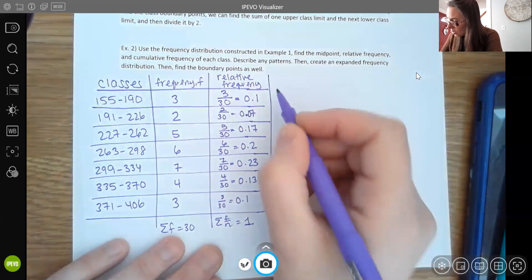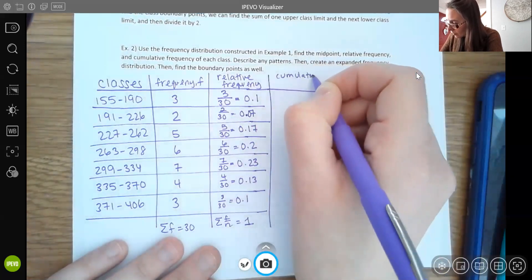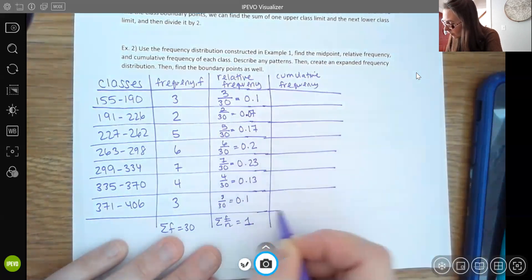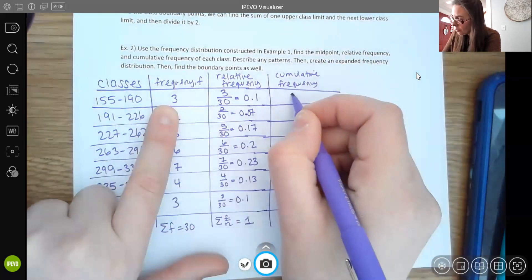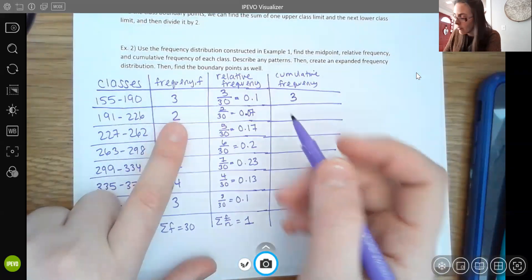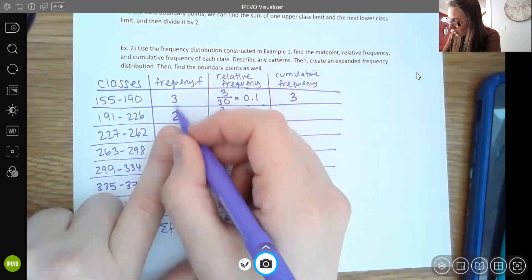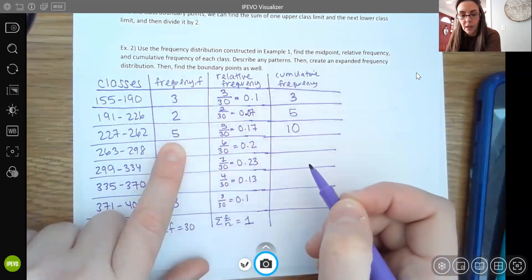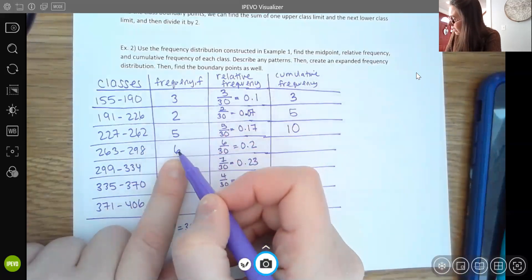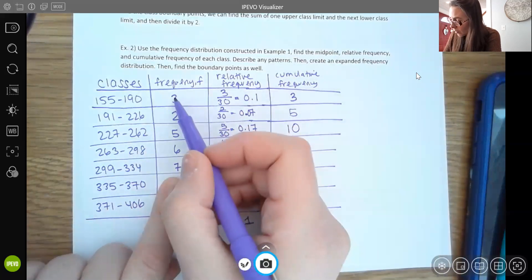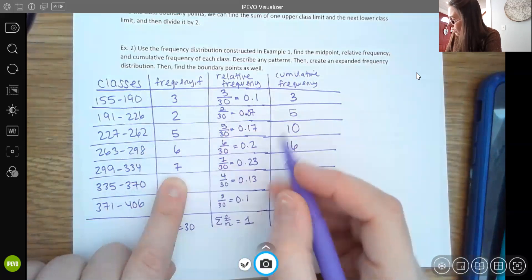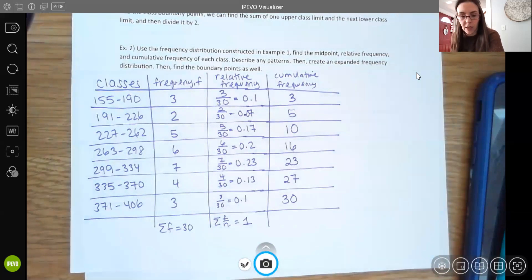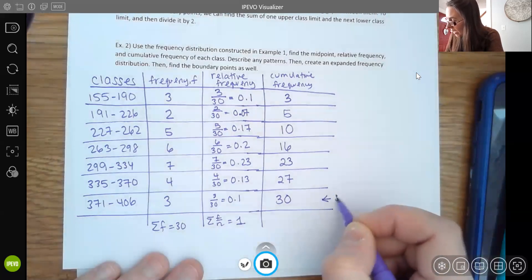Now your cumulative frequency is just a sum. So what you're doing is you're taking your first frequency of 3 and then you're adding it together. So here I have a 2. So I'm going to do this 2 plus 3 is 5. And then I'm going to add in the next group. So now I have 3 plus 2 plus 5 is 10. And then the next group, 3 plus 2 plus 5 plus 6 is 16. Then 16 plus 7 is 23. Then I'm adding in 4 more, which would give me 27. And then I'm adding in 3 more, which would give me 30. So your final row should be that same sample size.